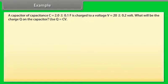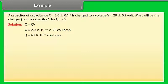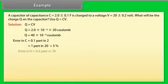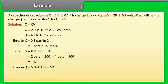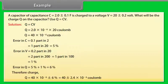Example. Let's take an example of errors. A capacitor of capacitance C equals 2.0 plus minus 0.1 microfarad is charged to a voltage V equals 20 plus minus 0.2 volt. What will be the charge Q on the capacitor? Use Q equals CV. Let us see the solution. Q equals CV. On calculating, we get Q equals 40 into 10 to the power minus 6 coulomb. Error in C equals 0.1 part into is equal to 5 percent error. Error in V equals 0.2 part in 20 is equal to 1 percent error. Error in Q equals 5 percent plus 1 percent is equal to 6 percent. Therefore, charge Q equals 40 plus minus 2.4 into 10 to the power minus 6 coulomb.